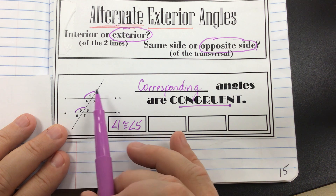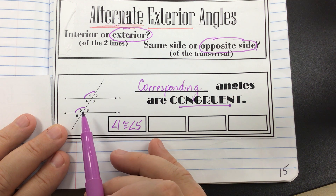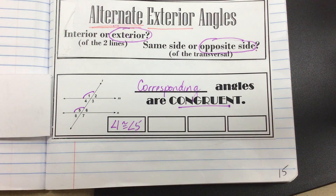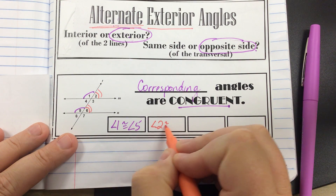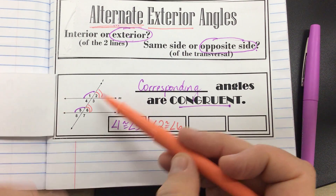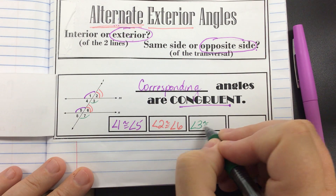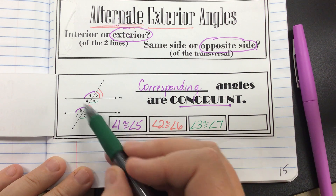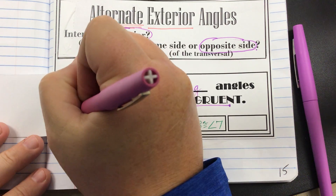In this group of four at the top, angle one is in the top left and angle five is also in the top left, so angle one and five are corresponding angles and therefore congruent. Next, angle two is congruent to angle six — two and six are both in that top right position. Continuing on, angle three is congruent to angle seven — three and seven are both in that bottom right position when you're looking at the groups of four.